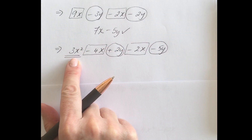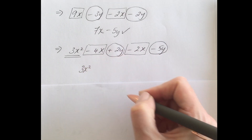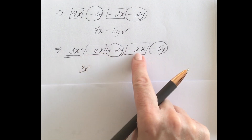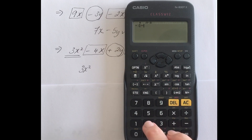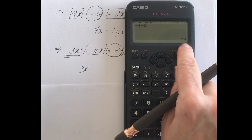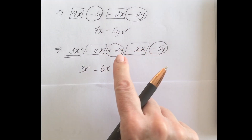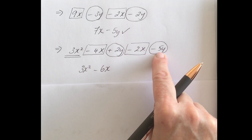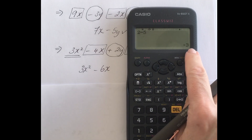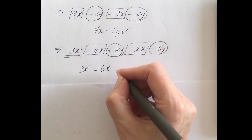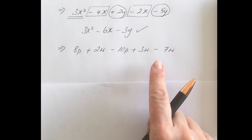I have a 3x² here with no other x squared terms to add to, so I leave it as 3x² in my answer. Then minus 4x minus 2x — double-checking on the calculator: negative 4 take away 2 is minus 6, so that's minus 6x. Then plus 2y minus 5y: positive 2 take away 5 is minus 3, so that's minus 3y. Final answer: 3x² − 6x − 3y.